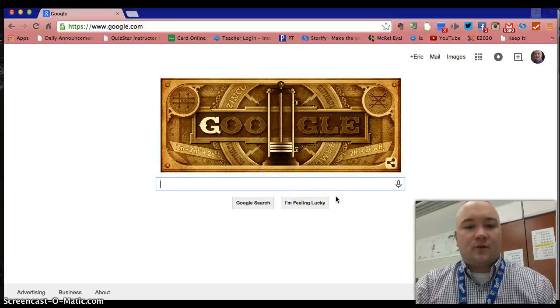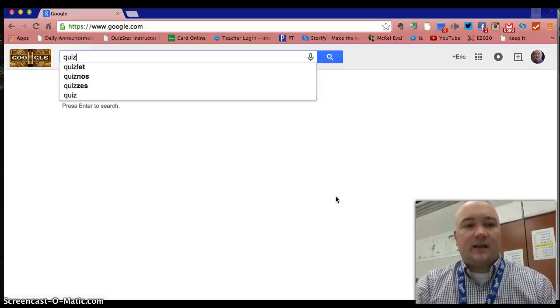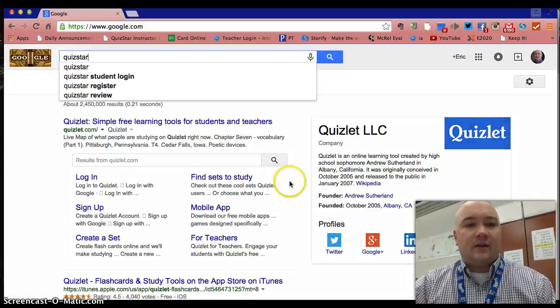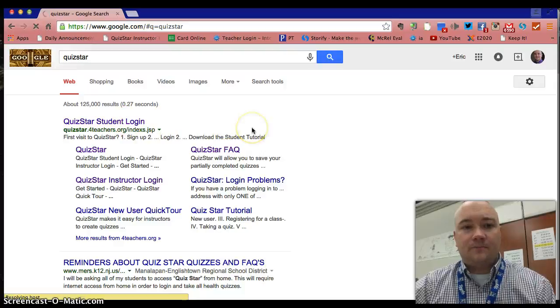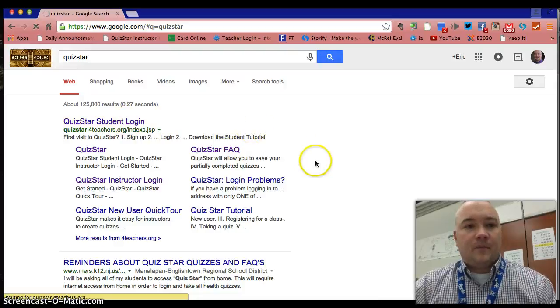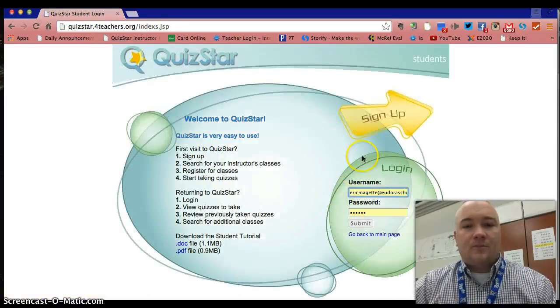The tool that we're going to use is called QuizStar, and the easiest way to get there is to just go in and do a Google search for QuizStar. You'll see this screen will come up, and you can just go to QuizStar student login and it's going to pull you up.